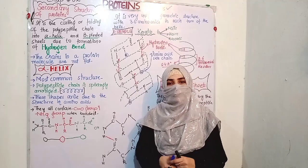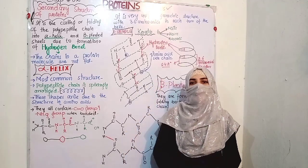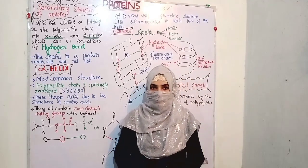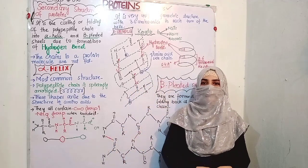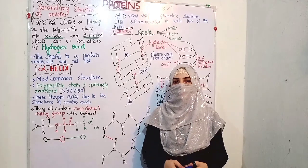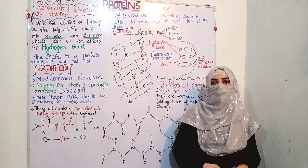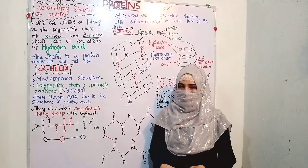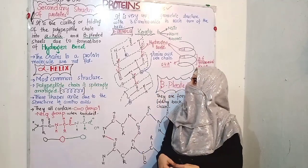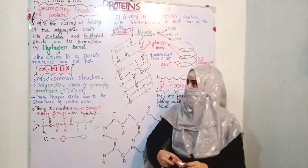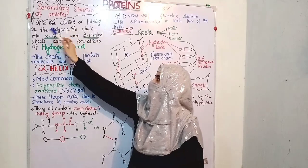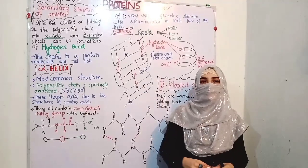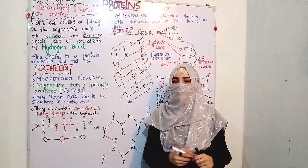Protein is the most important organic compound present in our body. So let's get started on today's lecture, which is the secondary structure of proteins. In the previous lecture we studied primary structure, which is basically a simple polypeptide chain.